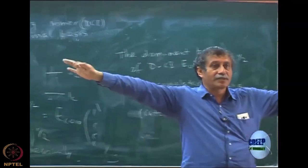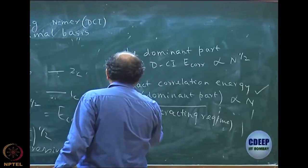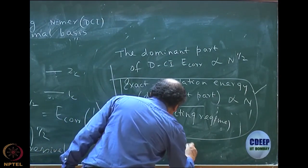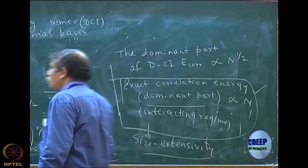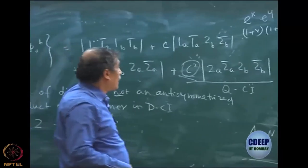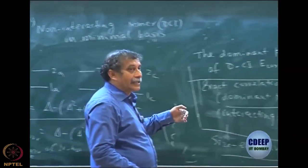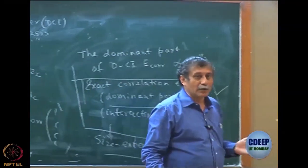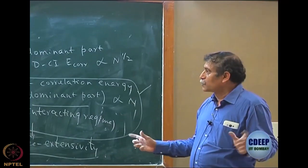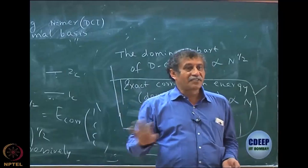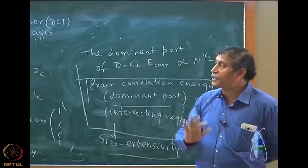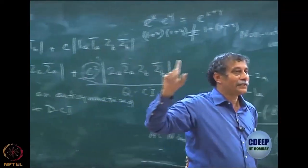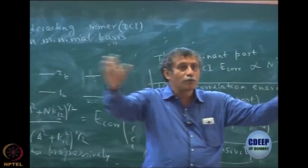When you split them apart, they will be exactly n times. This particular property — that even in the interacting regime the dominant part remains proportional to n — is actually known as size extensivity. This is a very recent understanding. In a way you can say that size consistency is a manifestation of size extensivity, because size extensivity is about the interacting regime.